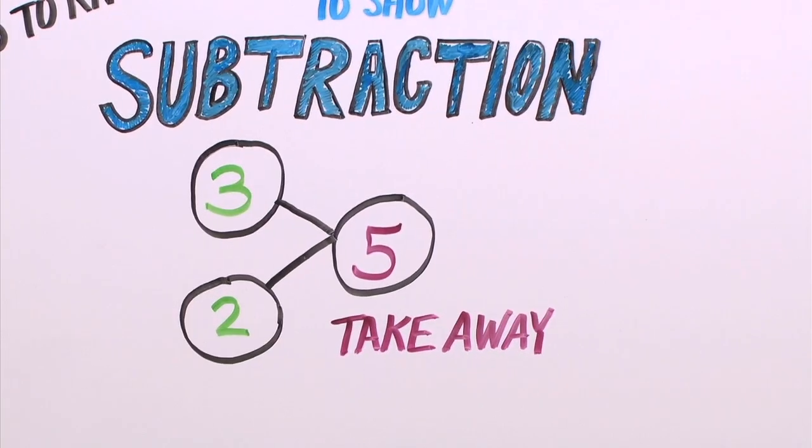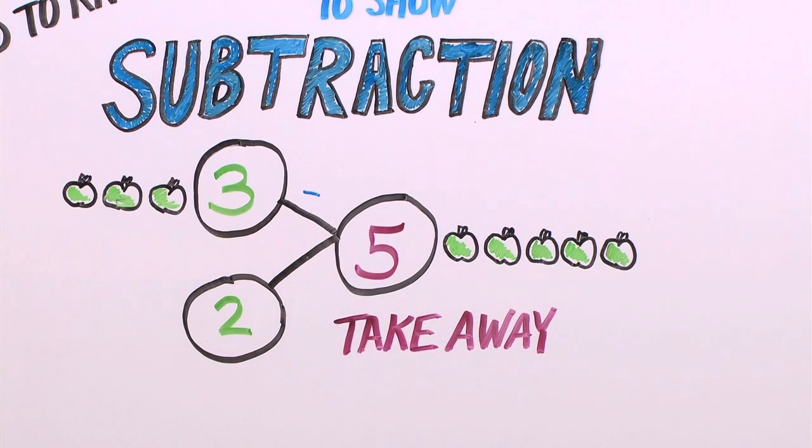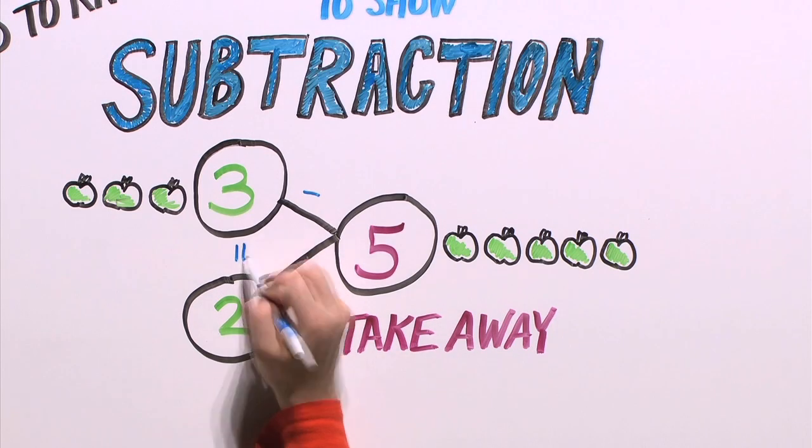Our number bond shows five apples, take away three apples, equals two apples.